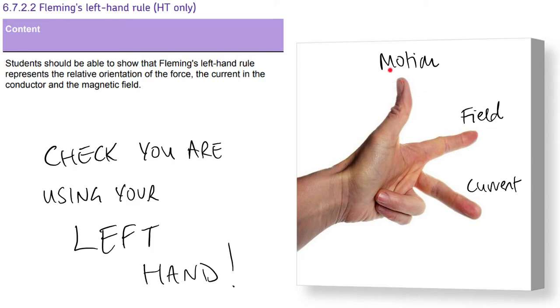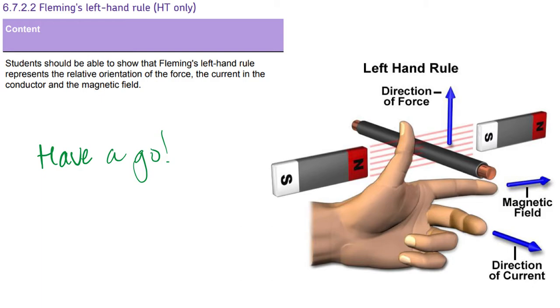So to be clear, your thumb tells you the force or the motion. Your first finger tells you the direction of the magnetic field. And your second finger tells you the direction of the current. Now, my wife is from North Yorkshire, and when she was at school, she learned this as Middlesbrough Football Club.